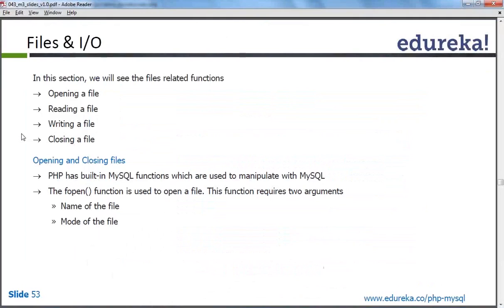We can access files in PHP, we can modify files in PHP. Basically, four kinds of operations we can do over a file. First is opening a file, we can open a file, we can read a file, we can write to a file, or we can close a file.